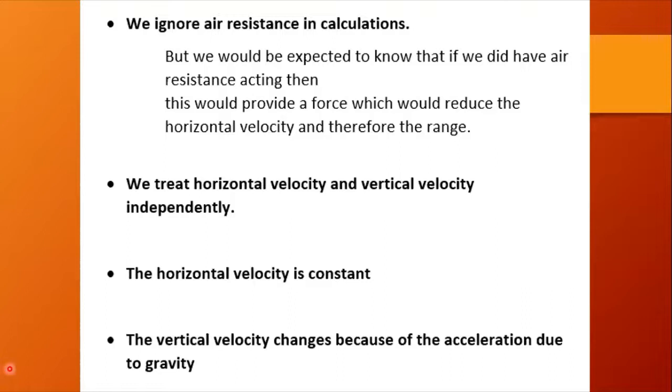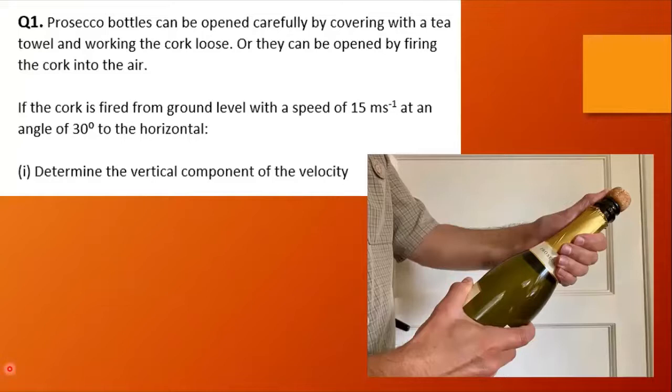Prosecco bottles can be opened carefully by covering with a tea towel and working the cork loose, or they can be opened by firing the cork into the air. It seems a real waste to shake the bottle and then fire the cork. You'd lose too much good wine. So here, if the cork is fired from ground level with a speed of 15 meters per second at an angle of 30 degrees to the horizontal, determine the vertical component of the velocity.